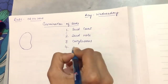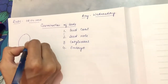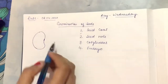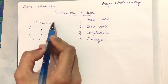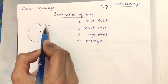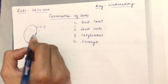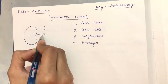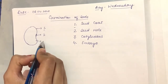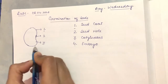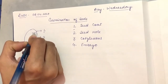As you can see here, this is the seed coat which protects the seed from unfavorable conditions. This is the seed hole which allows air and water to enter into the seed. This is our cotyledon which stores food for the baby plant.